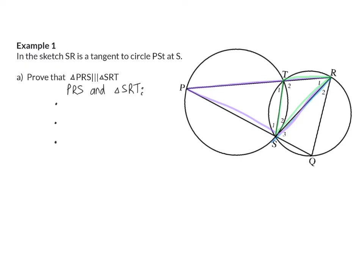So for that, I'm going to start off by saying that I can see that angle R1 is a common angle, so it's the same size in both triangles, so R1 is equal to R1. And my reason for this, it's a common angle.